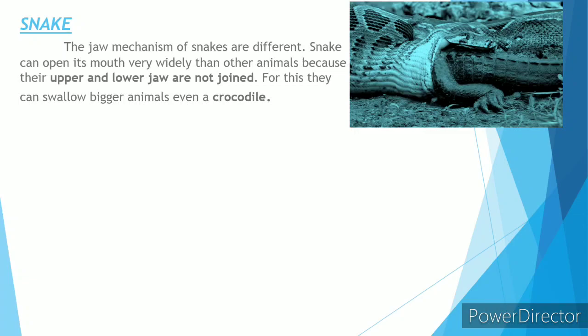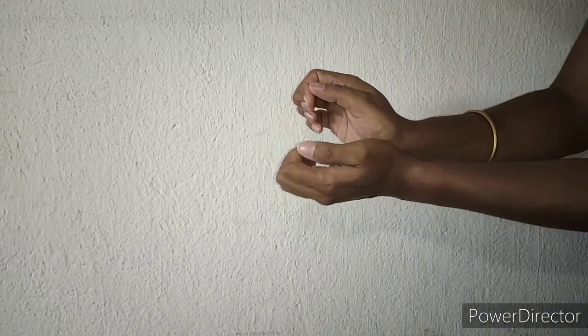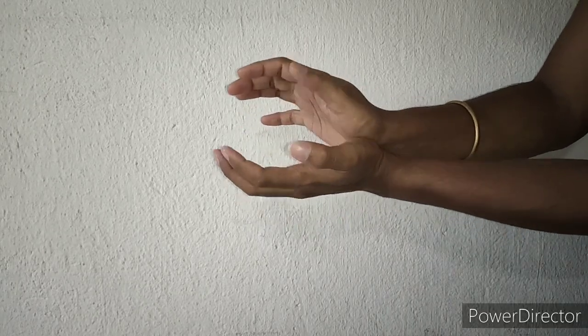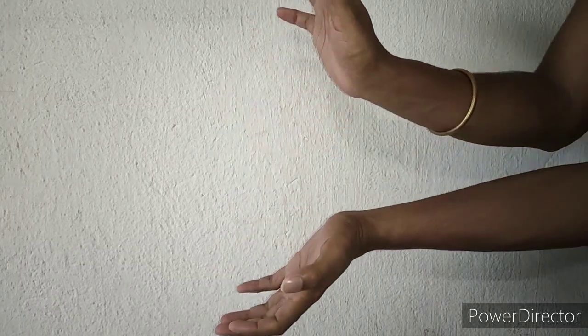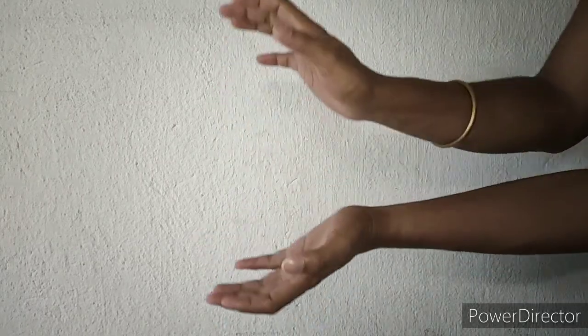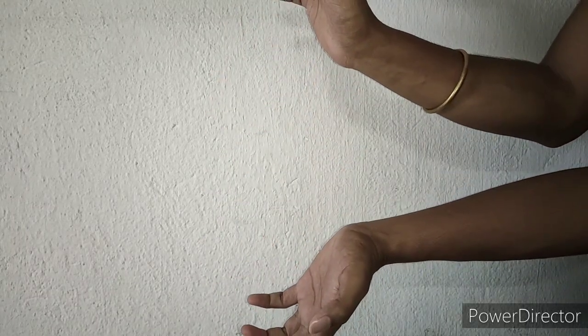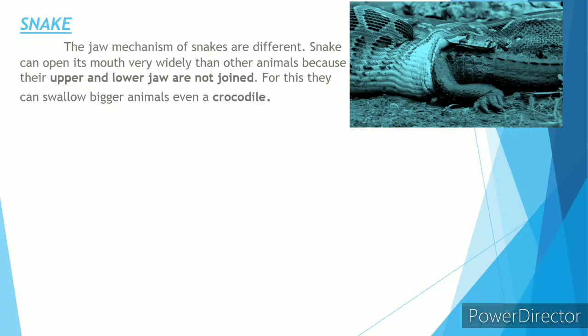You will be surprised to know that a snake can engulf even a crocodile or a cow whole. Suppose this is the jaw and these are the teeth — our jaw is fixed at the back like this, but the snake's jaw can open very widely to catch bigger animals.